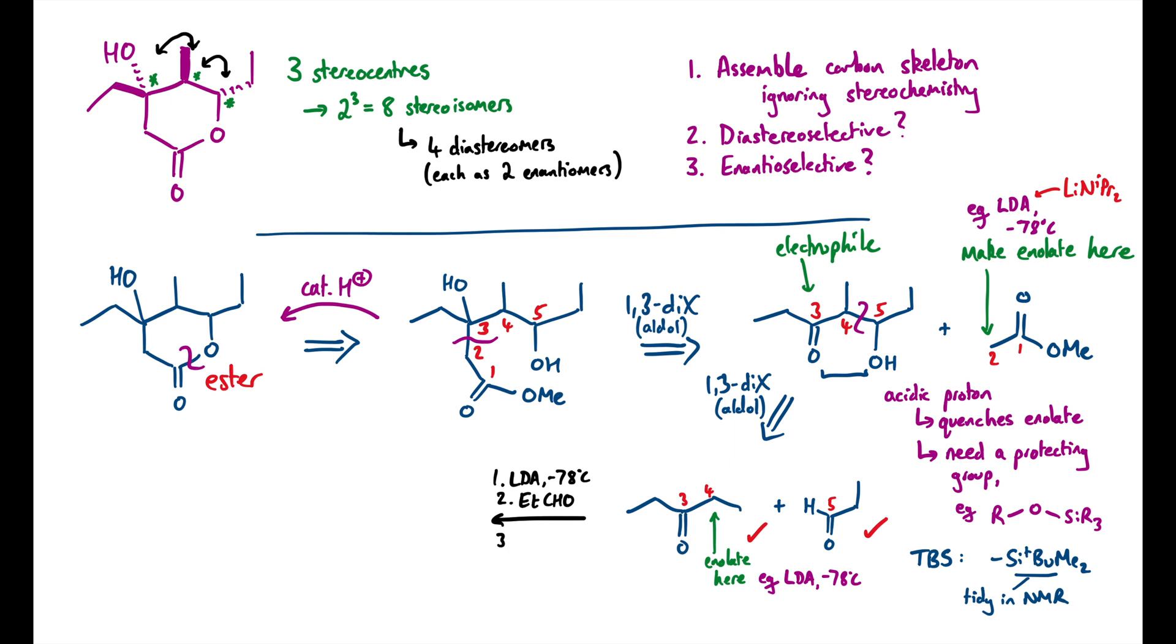Third, I need to put the silyl protecting group on. So I'm going to use TBS triflate in the presence of 2,6-lutidine as a pretty good way of dealing with these slightly hindered secondary alcohols, which has some branching either side of it. The silyl group itself is quite bulky, so the idea is we put on a really good leaving group in this triflate, and the compatible hindered base for these sorts of reactions is this pyridine derivative. So those steps will get me to this molecule here.